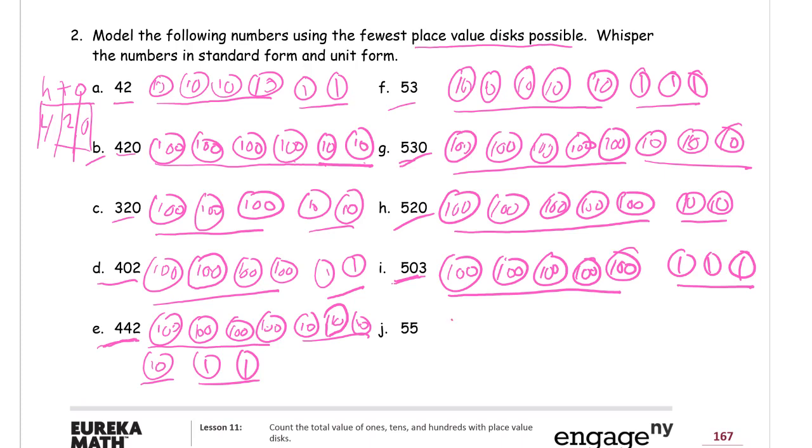And our last one here. We need 50, so we need 5 tens. 1, 2, 3, 4, 5. These are all tens. And then we need 5 ones. 1, 2, 3, 4, 5. And so this is 55. And in unit form, it's 5 tens, 5 ones.